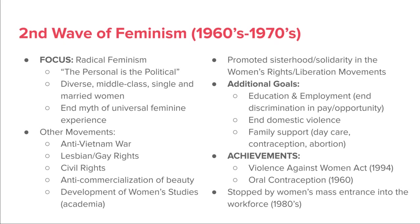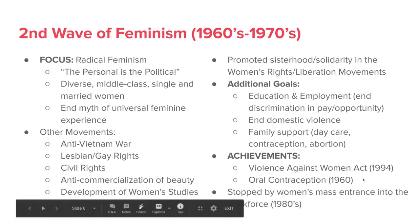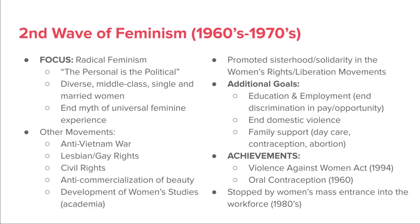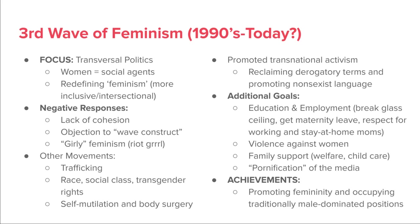Some achievements of the second wave include the Violence Against Women Act and allowing oral contraception to be purchased over the counter. This second wave was halted when in the 1980s a large number of women entered the workforce — because some employment opportunities became more available, it tended to override some of the other issues that still needed to be addressed.